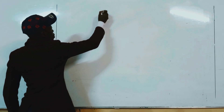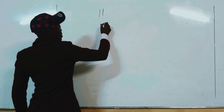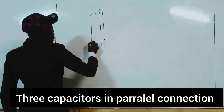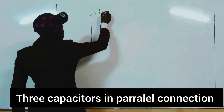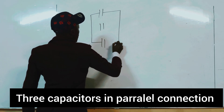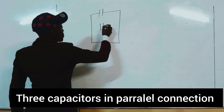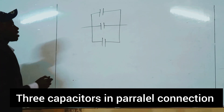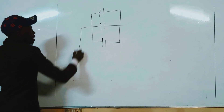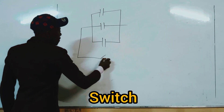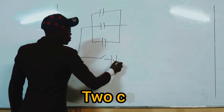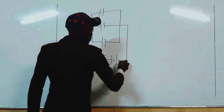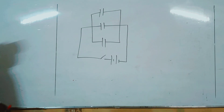We are going to consider three sets of capacitors. We have three capacitors in parallel, and we have a switch here and two cells.